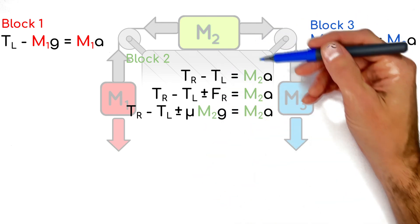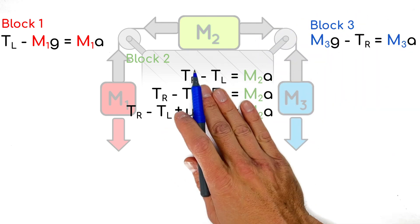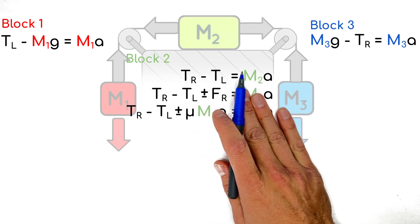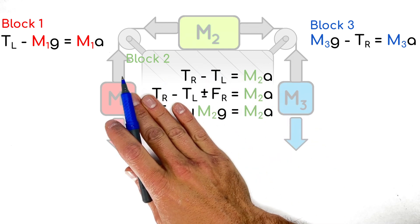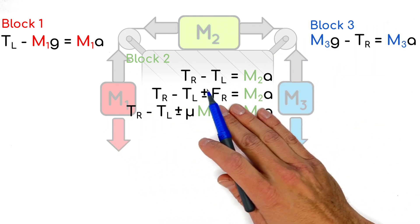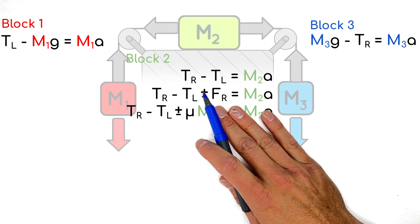If we apply Newton's second law to this central block, we've got saying to the right is positive. We have the tension on the right minus the tension on the left would equal M2A in the frictionless case. But because there's friction in this problem, we need to put friction in here. Now, that friction could be to the right or the left, depending on which side is heavier here. So I'm just going to leave this as plus or minus friction here. We'll look at how to make that situational a little bit later on.